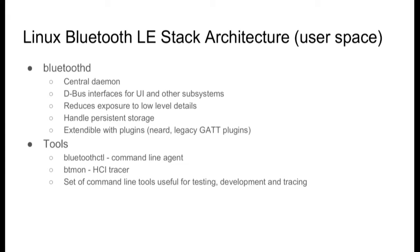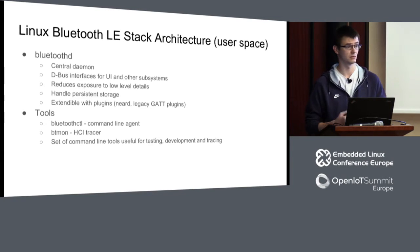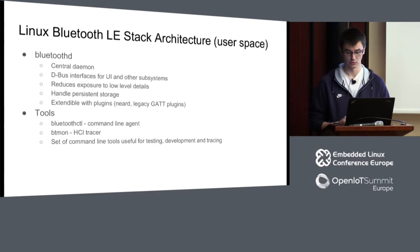There's a NEARD plugin that implements a handover interface required by NEARD, so you can get out-of-band pairing using NFC. This is a bit of a star here because it only supports basic mode right now — it's still not implemented for LE, but eventually it will be. There are also legacy GATT plugins that predate the D-Bus generic GATT API. Those are currently deprecated by default, so you need to explicitly enable them when you build BluetoothD if you want to use those legacy interfaces — but you really shouldn't.